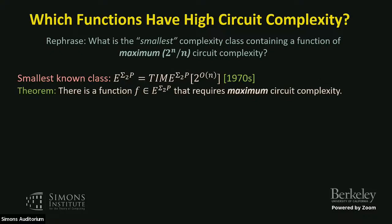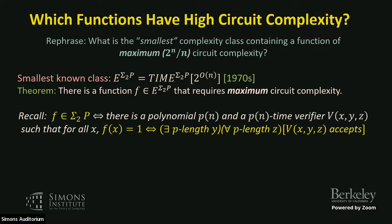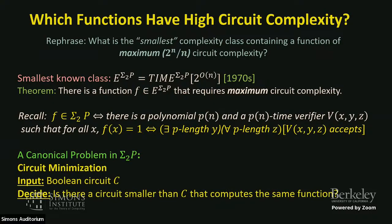There's a function in E^{Sigma_2^P} that requires maximum circuit complexity — this has been known since the 1970s. Recall Sigma_2^P is NP^NP: the predicate is 'there exists a poly-length y, for all poly-length z, some verifier accepts.' A canonical problem in Sigma_2^P is circuit minimization: given a Boolean circuit, is there a smaller circuit computing the same function? This is believed to be Sigma_2^P-hard.